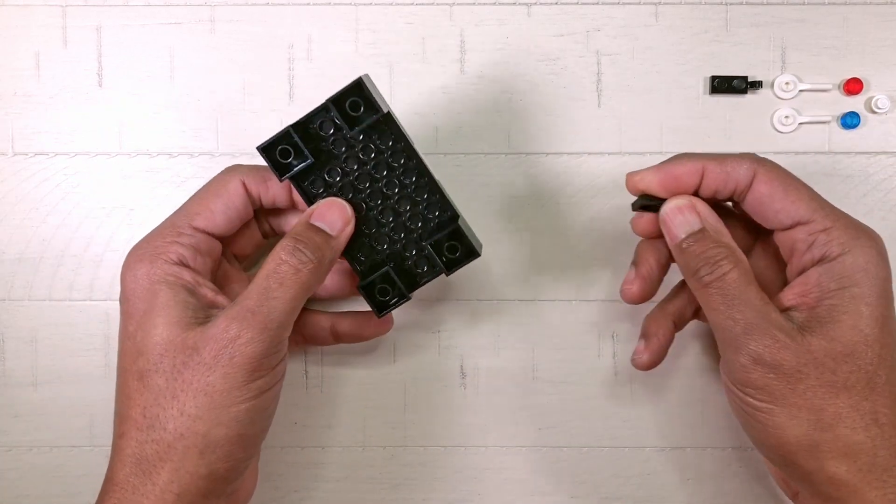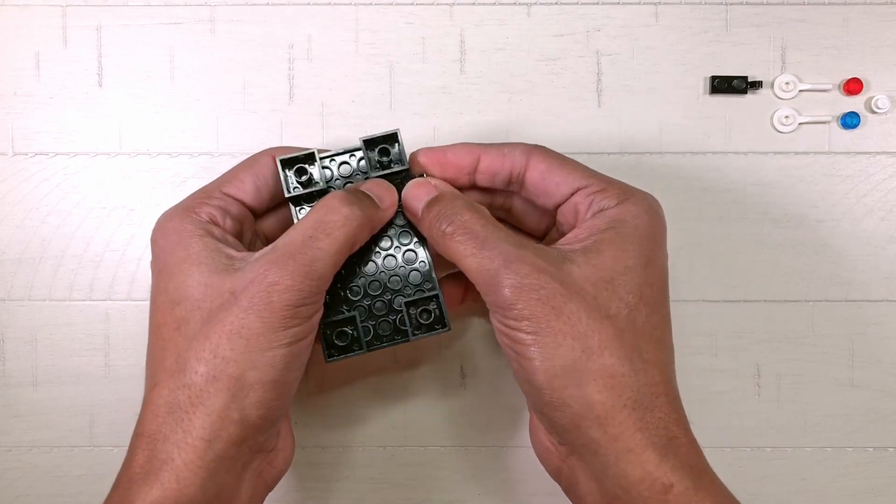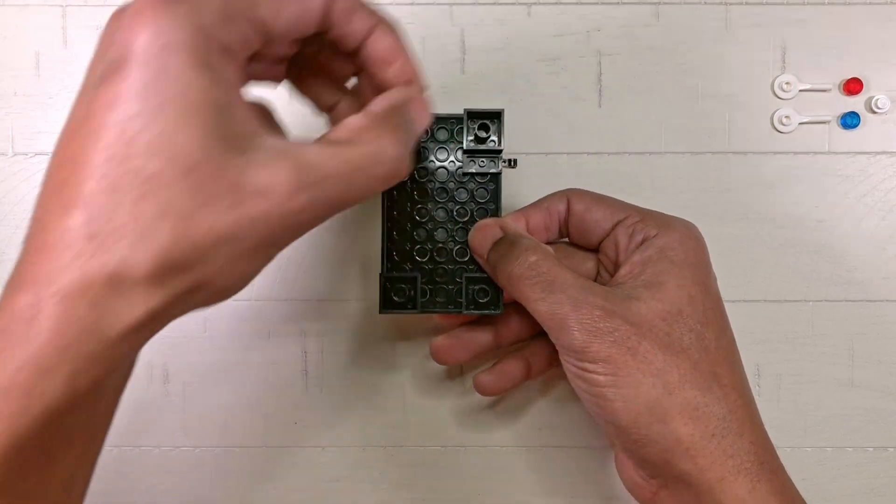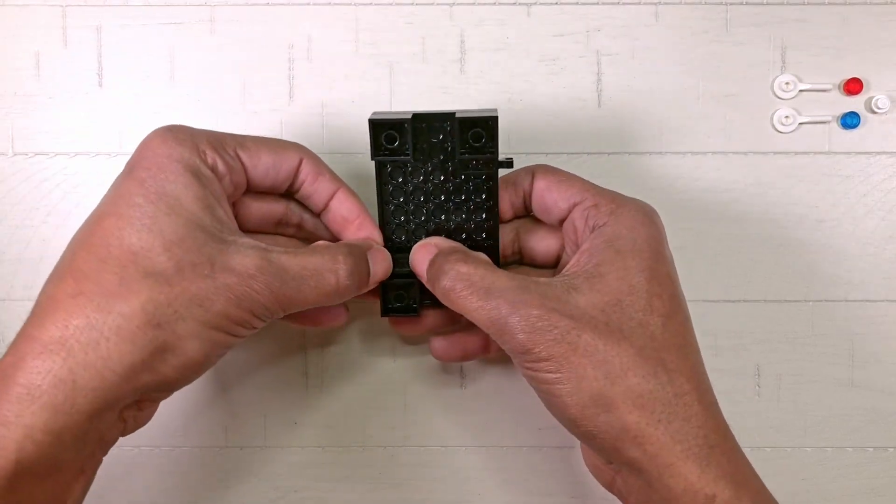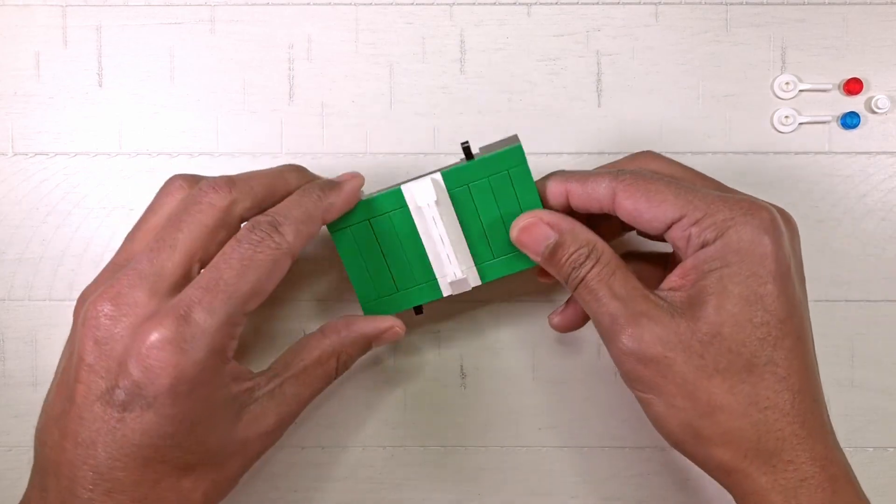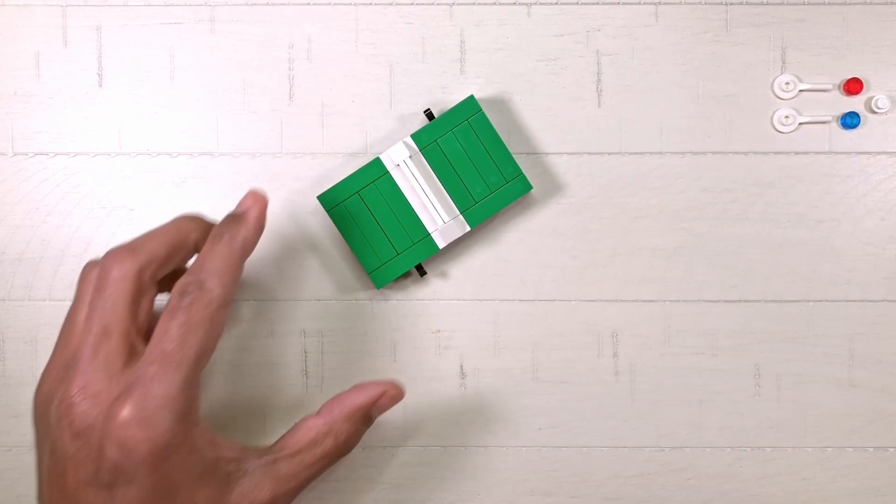Next attach a 1 by 2 plate with end clip just beneath the top right 2 by 2 brick. Attach the remaining 1 by 2 plate with end clip just above the bottom 2 by 2 brick. Each of these will be our paddle holders when the table is not in use.